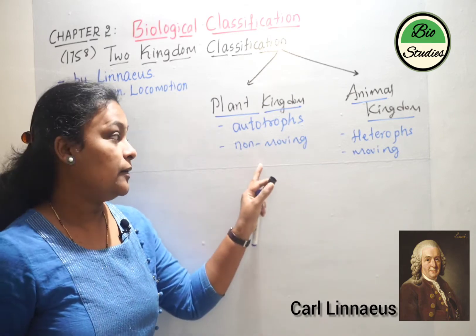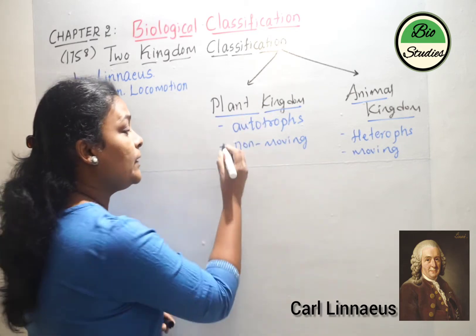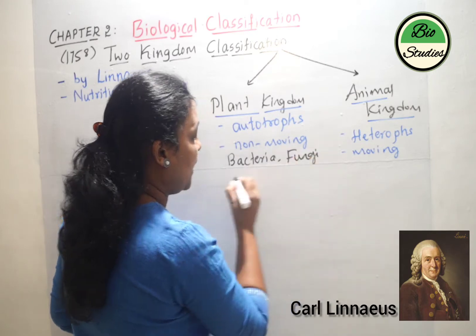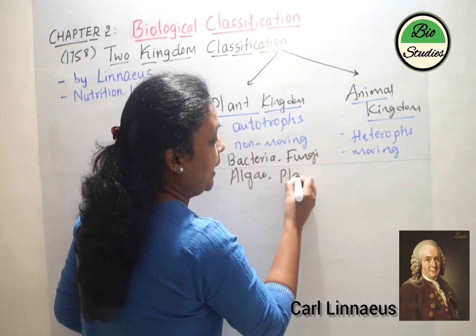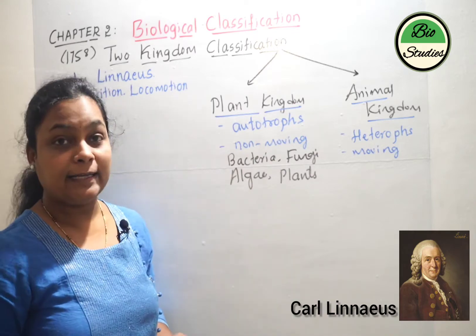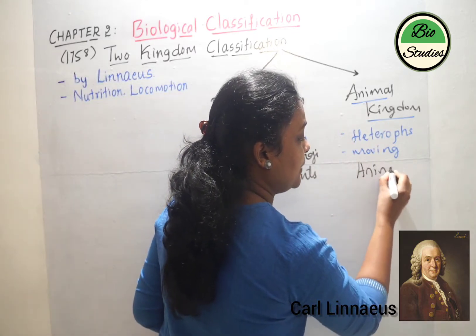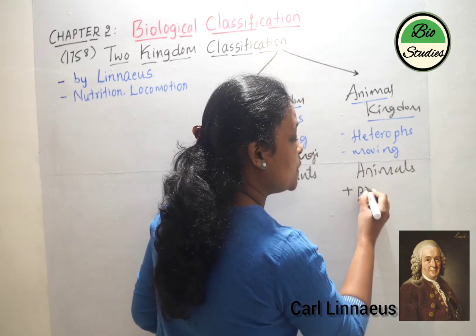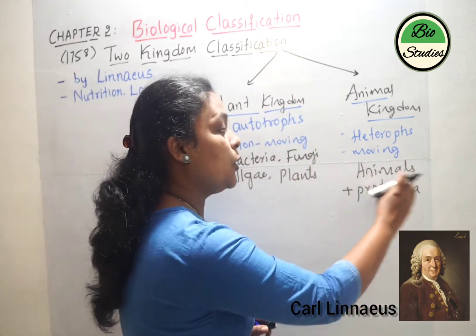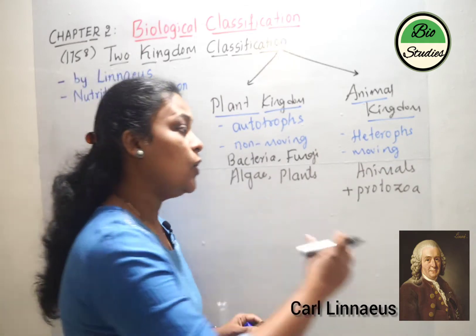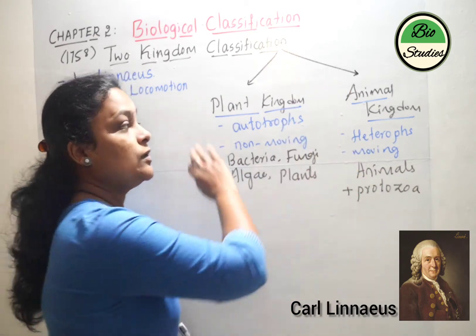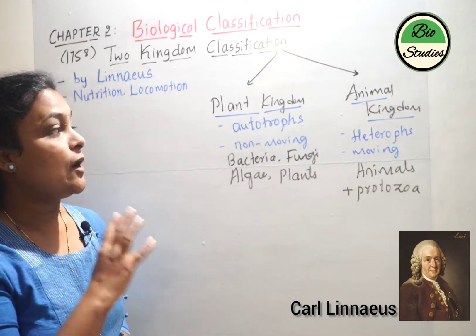The organisms considered under plant kingdom were bacteria, fungi, algae, and all plants. In the case of animal kingdom, all the animals were included, along with protozoans. During two kingdom classification, even the protozoans like amoeba, paramecium, and sporozoans were all grouped with animals under animal kingdom. This was the two kingdom classification given by Carolus Linnaeus.